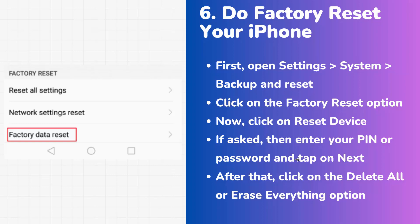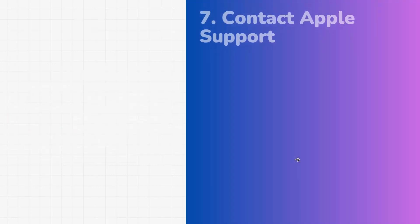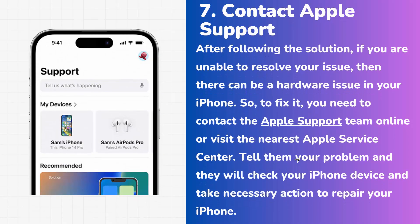If the green lines or green tint issue is still not resolved, the final solution is to contact Apple Support. If you are unable to fix the issue, there may be a hardware problem with your iPhone. Contact the Apple Support team online or visit the nearest Apple service center — the link is provided in the description. Tell them your problem and they will take the necessary action to repair your iPhone.